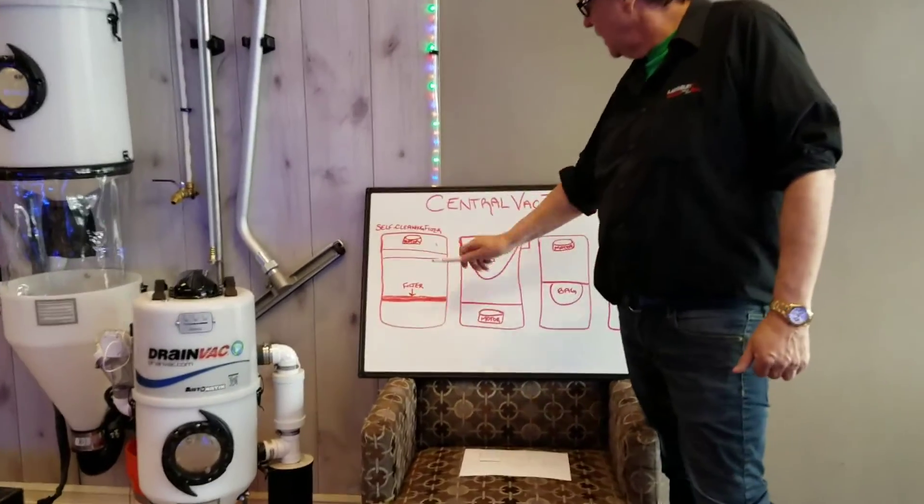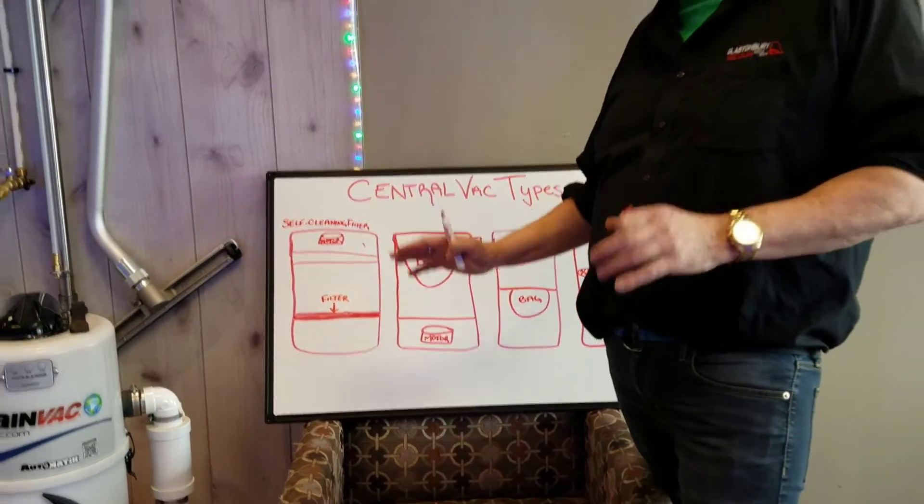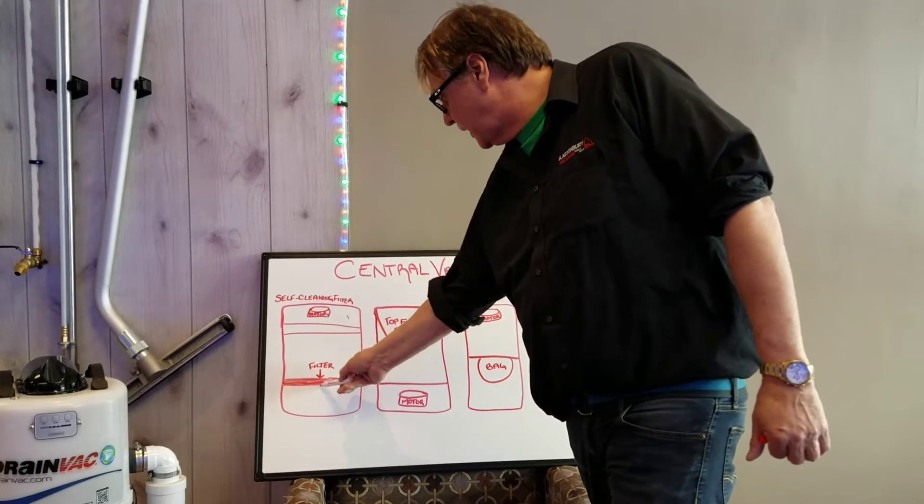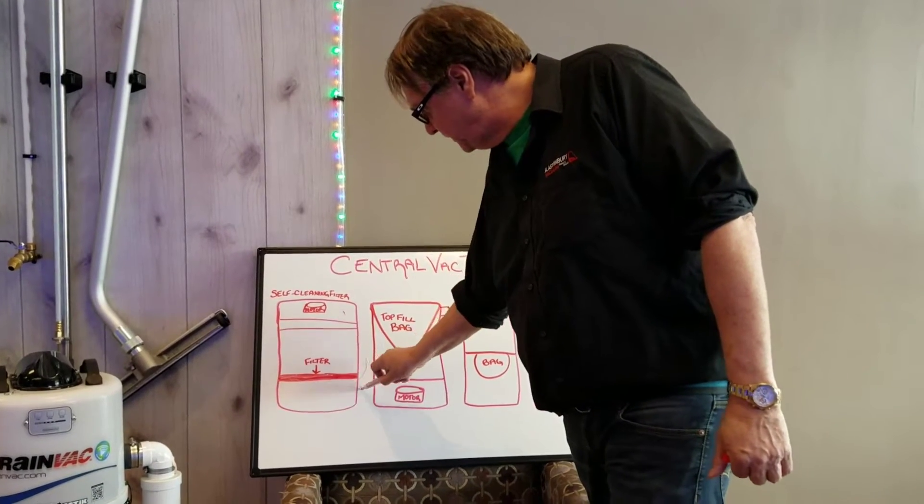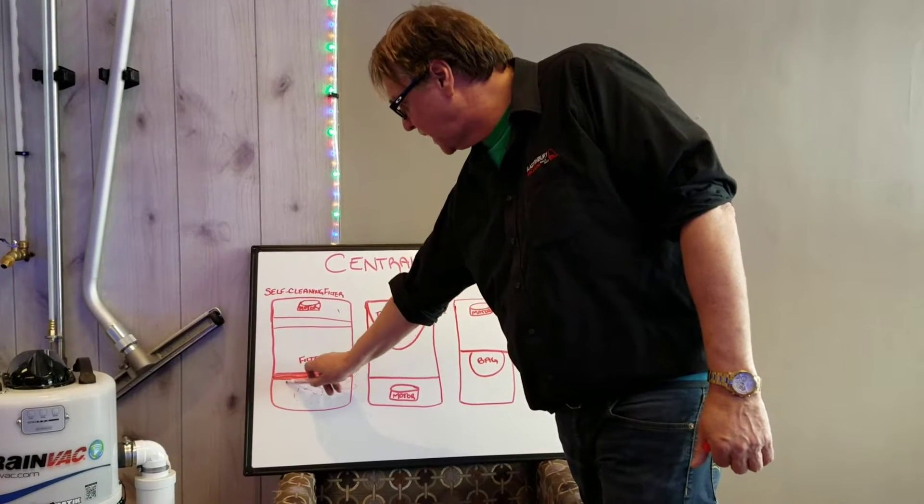Okay, this first system here is what most people will tell you is a self-cleaning central vacuum system. I have never seen one clean itself, ever. As the filter goes out here, the dirt comes in from the bottom, all of your dirt. And when you turn the machine on, all the dirt pulls up tight up against the filter.